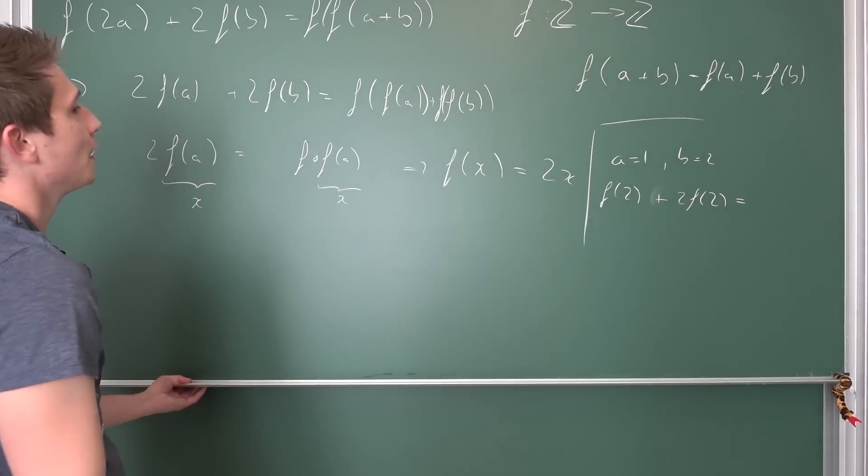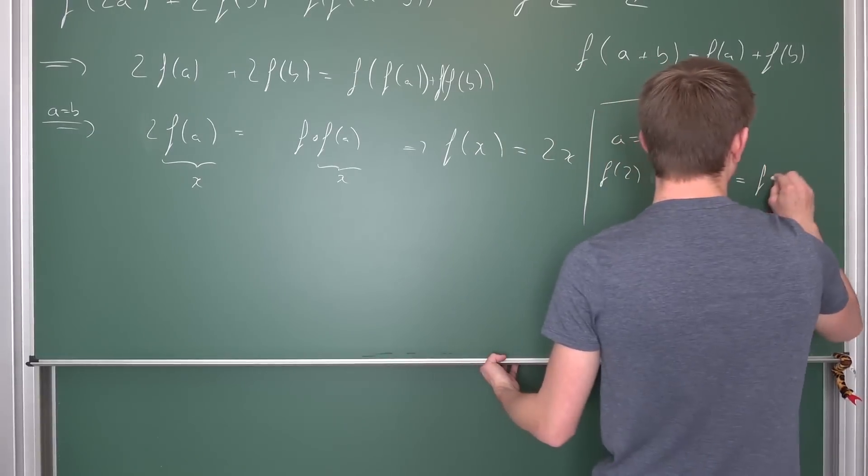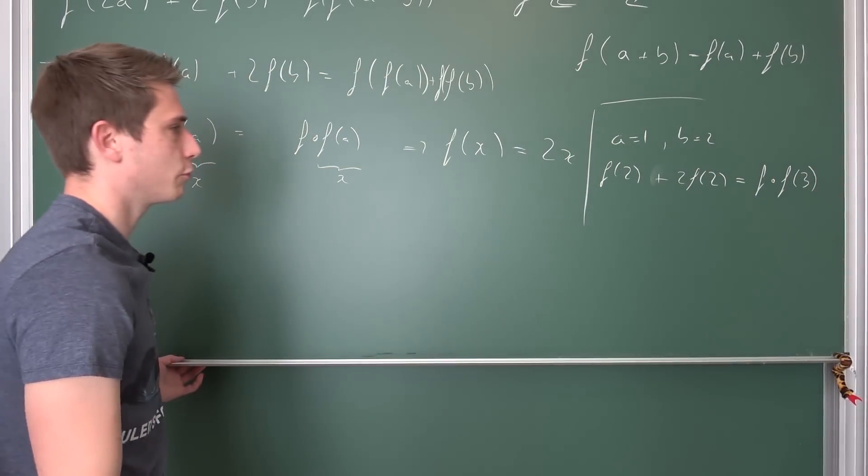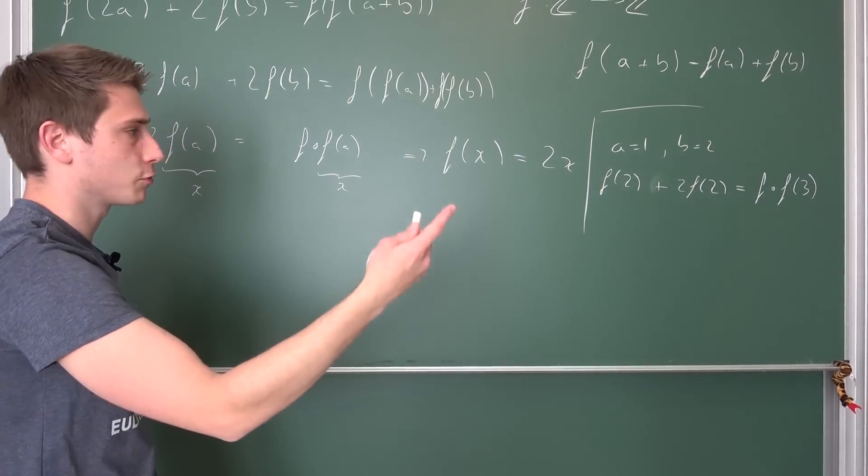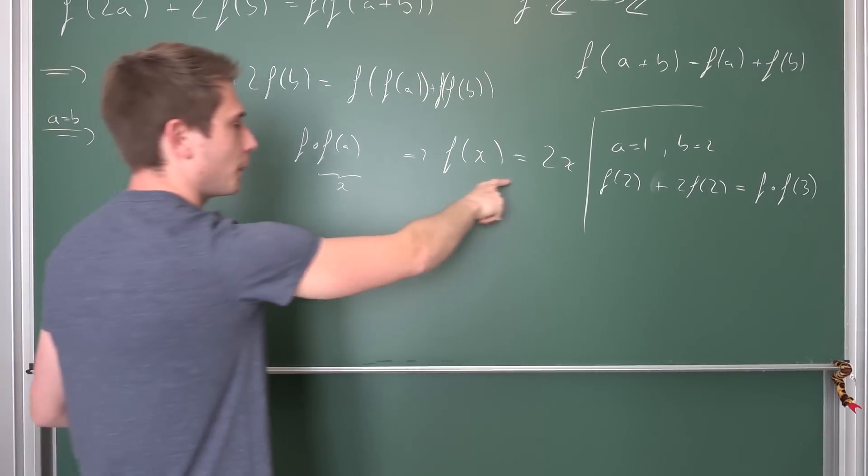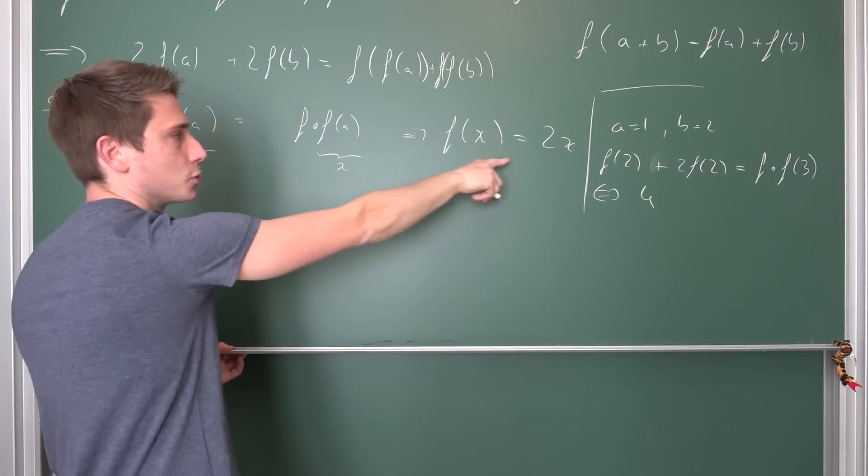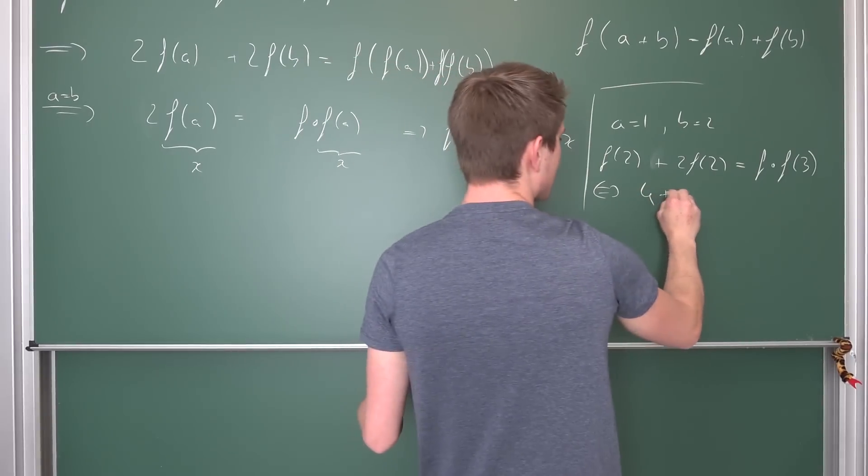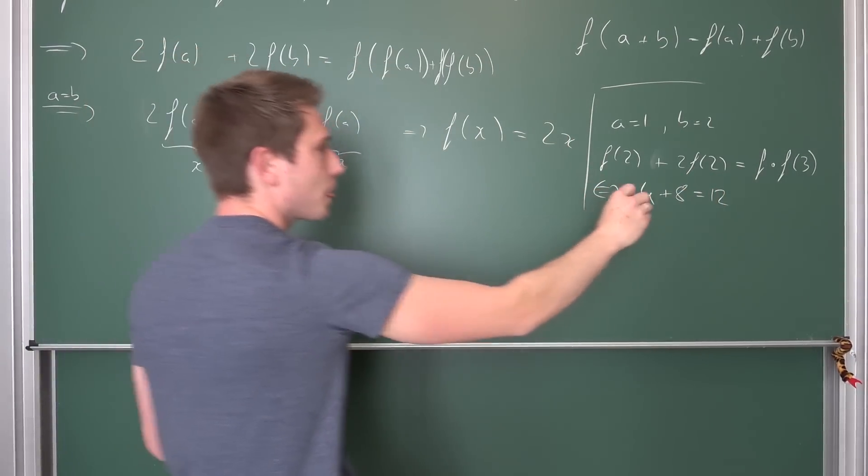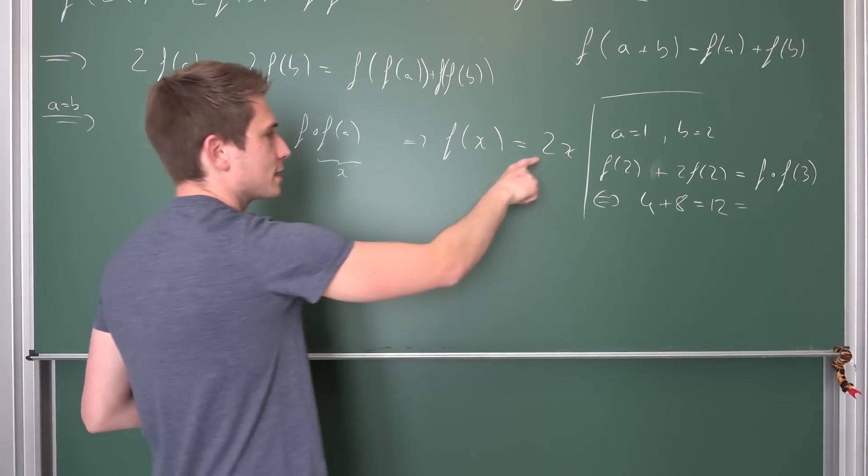Is equal to f of f(3). But f(3), or f(2) in general, is going to give us this is just 4. Plugging the two into here, 4 + 8 is equal to... this is 12.